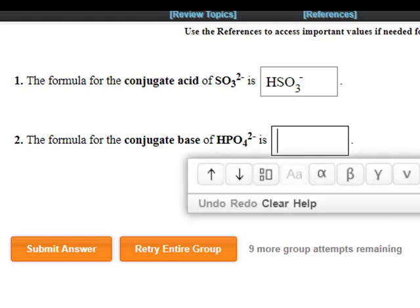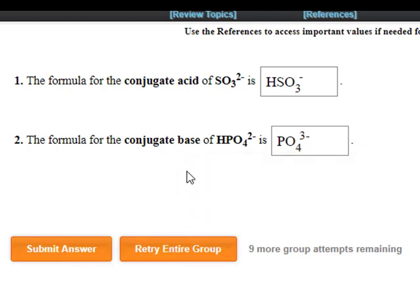The conjugate base for HPO4 2 minus is PO4 3 minus, because we're removing a positive 1 to get that negative 3.